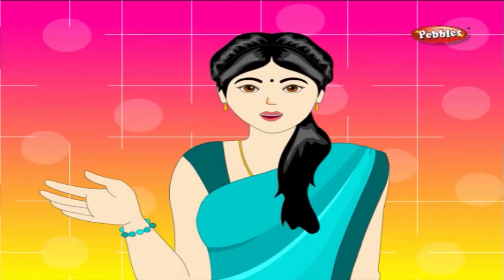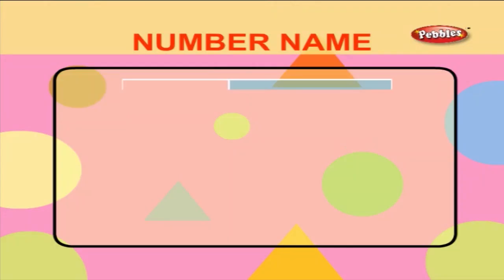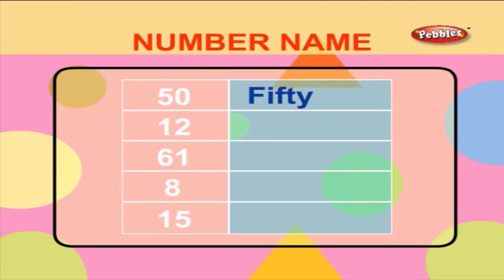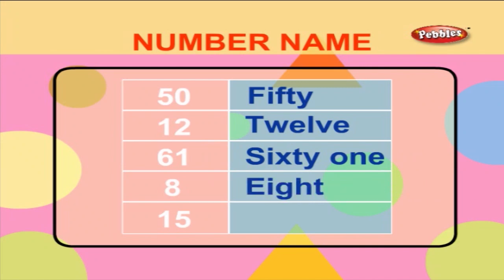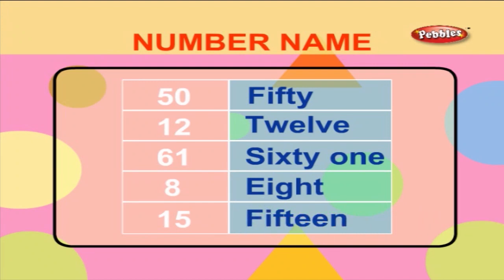Let us now write the number names for the following numbers. Fifty - F I F T Y - Fifty. Twelve - T W E L V E - Twelve. Sixty-one - S I X T Y O N E - Sixty-one. Eight - E I G H T - Eight. Fifteen - F I F T E E N - Fifteen.